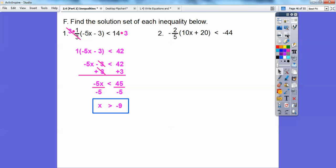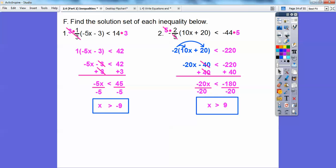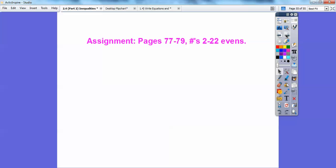Let's try one with something else in the numerator. Negative two-fifths times the quantity 10x plus 20 less than negative 44. Again, what's freaking you out is that denominator. Let's multiply both sides by 5. The fives cancel on the left. You still have the negative 2. Now we don't have a fraction anymore. Now we distribute the negative 2 through. We get negative 20x minus 40. Add 40 to both sides to get rid of the negative 40. Now when we divide by negative 20, it's going to flip that inequality, and we get 9. Alright, if you are in my class, I would assign that for your homework. Take care.